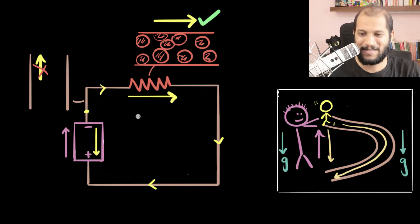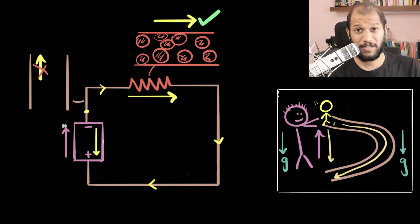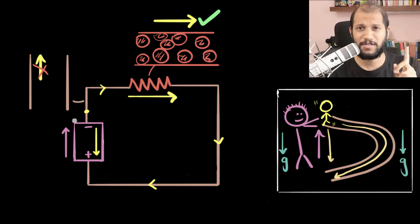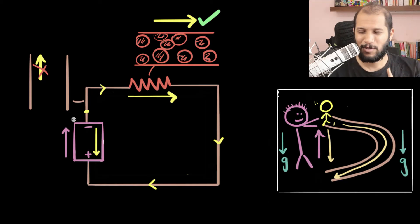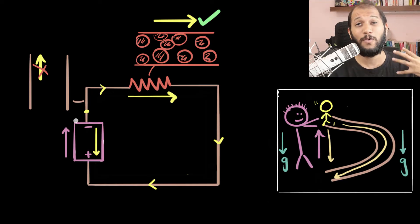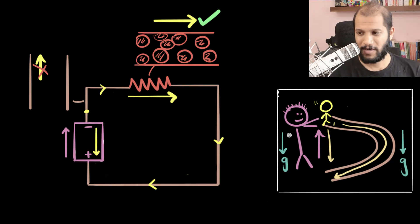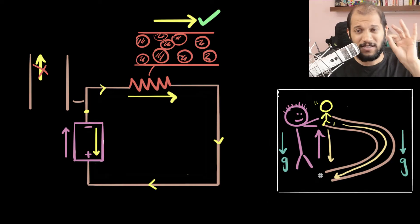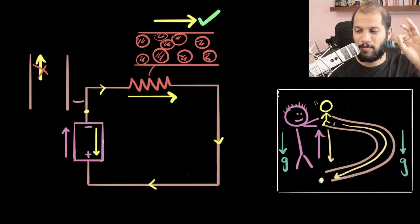And you can immediately see this is sort of the main reason why the potential difference across the battery is the same as the potential difference across the resistor — because all the forces of the battery are only concentrated in the resistor. But let's answer that question more rigorously by going from forces to potential difference.